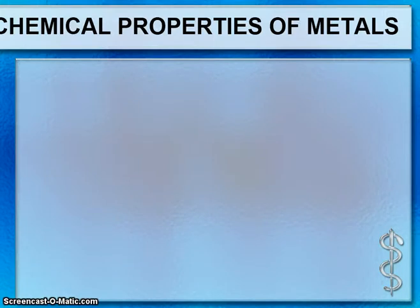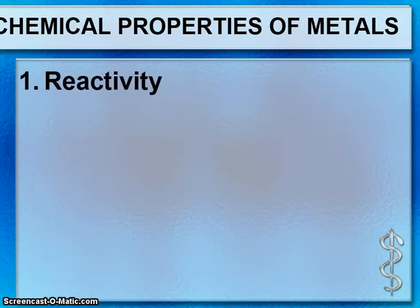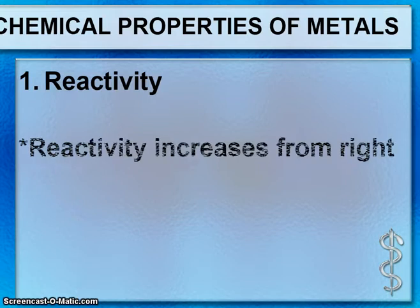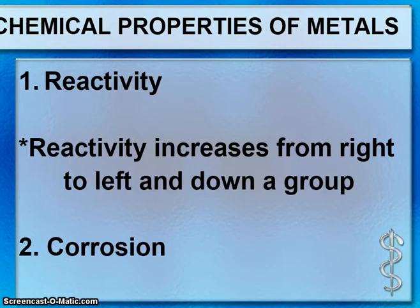Chemical properties: number one is reactivity — the ease and speed at which elements react with other elements. The second chemical property is corrosion — the gradual wearing away of a metal due to a chemical reaction.